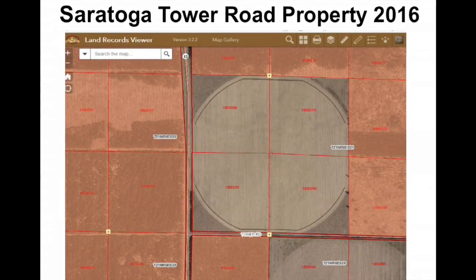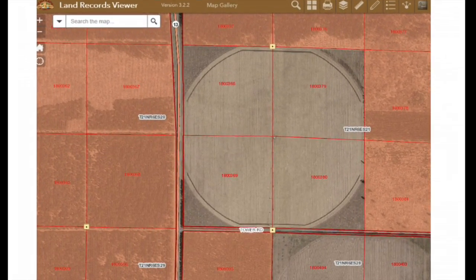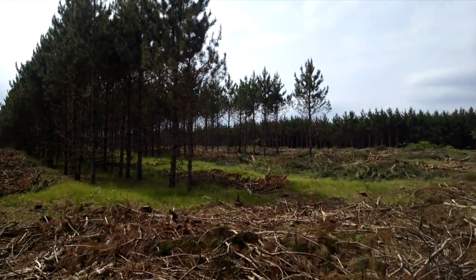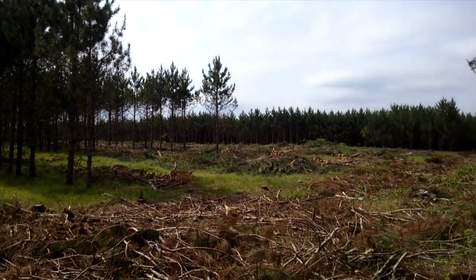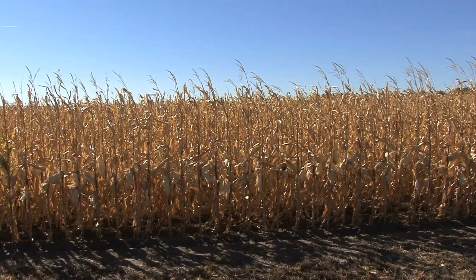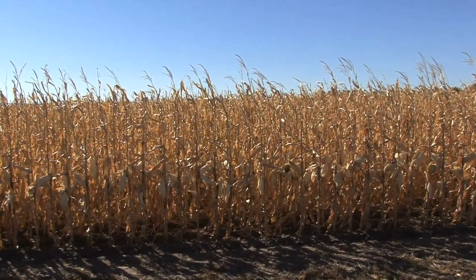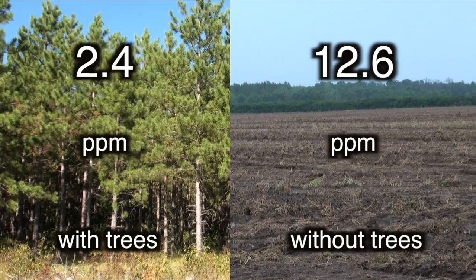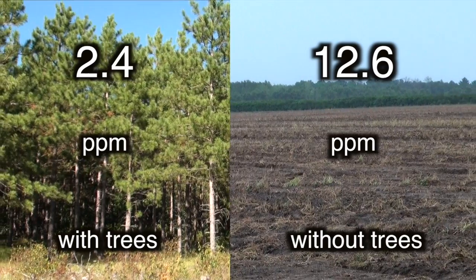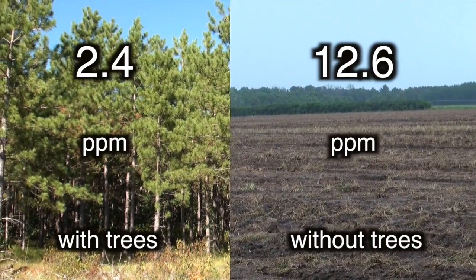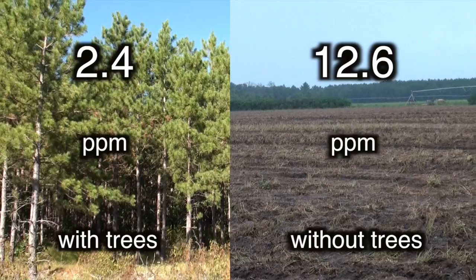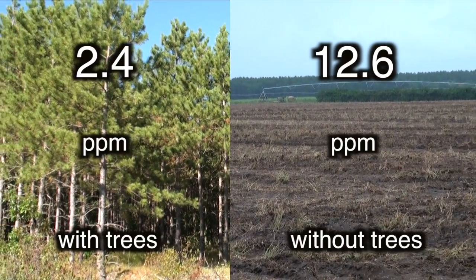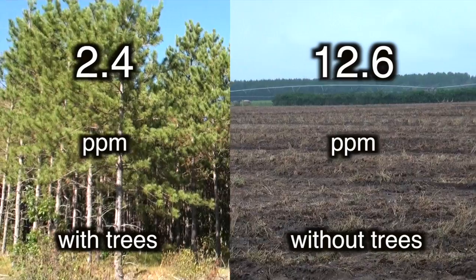Here's the same 140 acres, now devoid of trees. This acreage was subsequently planted with crops of corn in 2014 and 2015, and soybeans in 2016. Nitrate readings since the deforestation of this acreage show an increase from 2.4 parts per million to 12.6 parts per million in just three years.